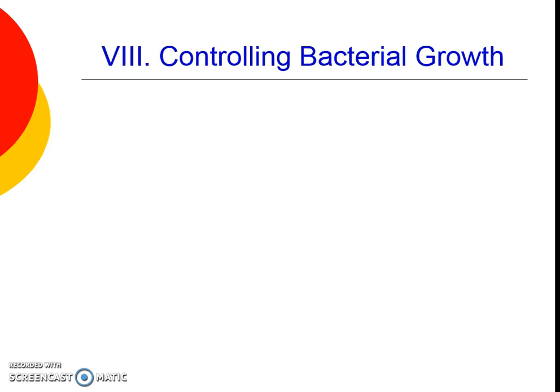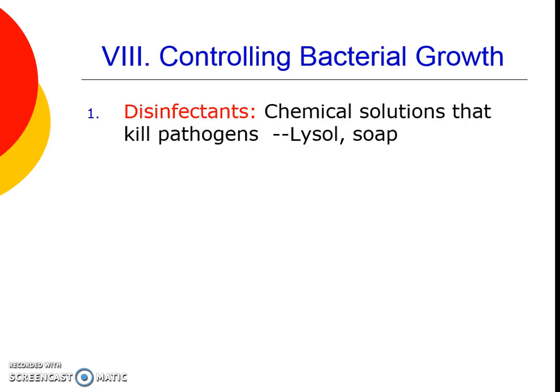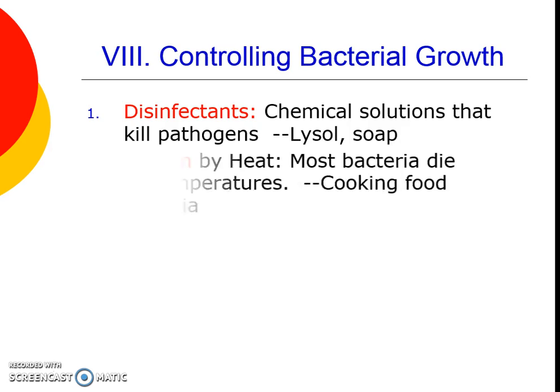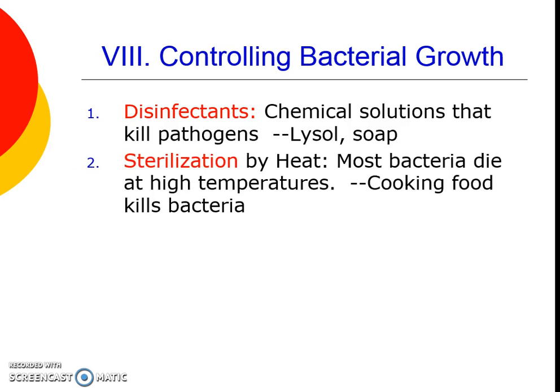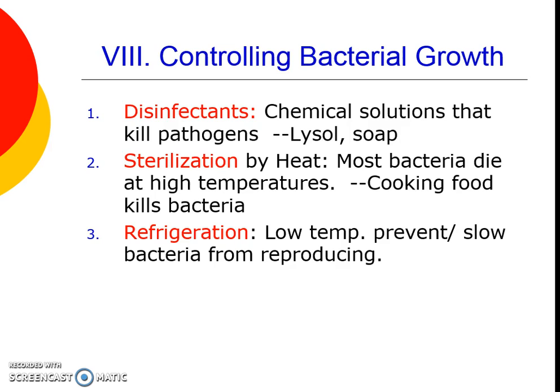How can we control bacterial growth? We can use disinfectants — chemical solutions that kill the pathogen, like soap. They aren't antibiotics but they do kill the pathogen. We need to be careful because killing off certain bacteria can leave behind stronger types, creating super bacteria or superbugs, so we need to eliminate them thoroughly. Humans often sterilize an area by heat — we cook our food for this reason, because undercooked food can harbor bacteria that cause food poisoning. We can also refrigerate food, since low temperatures really slow the bacterial reproduction process.